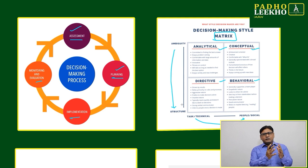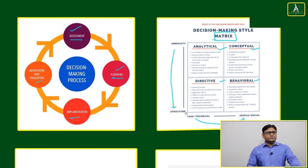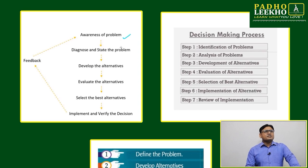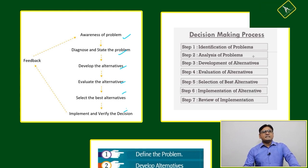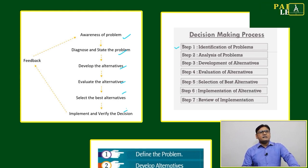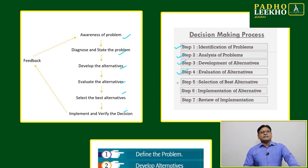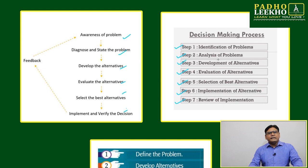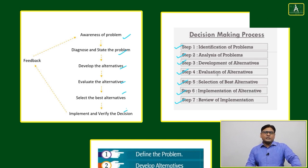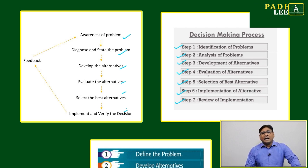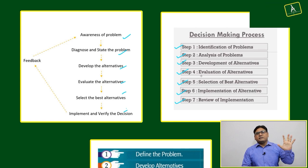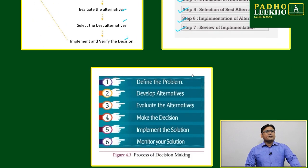This model or matrix helps clarify ambiguity. When everything is ambiguous, we can't understand all facets of a situation. The matrix — covering analytical, conceptual, direct, and behavioral points — helps remove that ambiguity and give structure. The full decision-making process includes identification of problem, analysis, development of alternatives, evaluation of alternatives, selection of the best alternative, and implementation. For our purposes, the five-step method is sufficient.